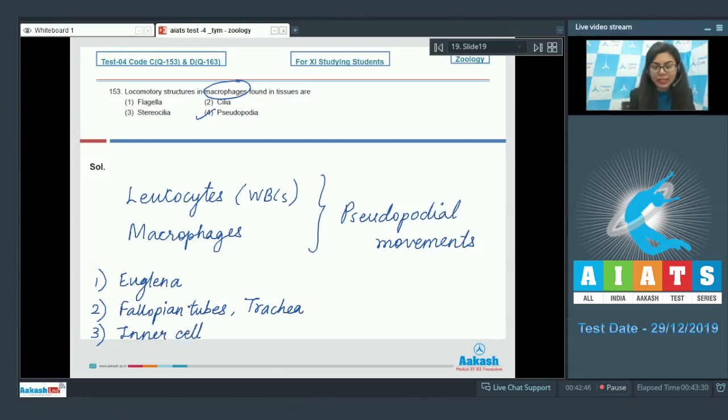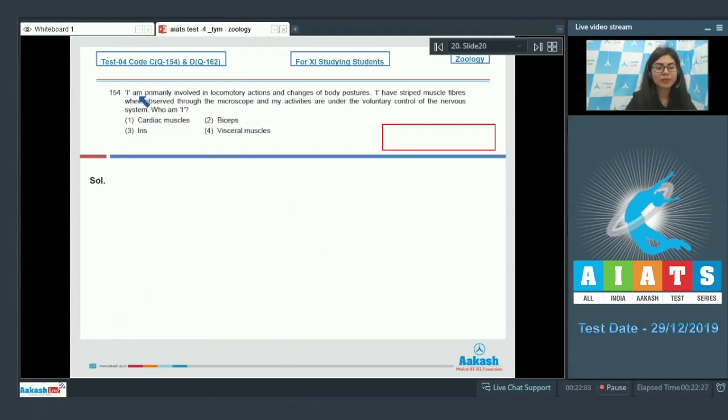Question 154: I am primarily involved in locomotory actions and changes of body postures. I have striped muscle fibers when observed through the microscope and my activities are under the voluntary control of the nervous system. Who am I? Cardiac muscles, biceps, iris, or visceral muscles? As per the data provided, the muscle fiber is striped and it's under voluntary control of our nervous system. And these two features are of skeletal muscle.